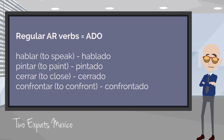Let's take a look at how you convert your verbs into the past participle. First we're going to cover regular AR verbs — regular means they follow this pattern, and AR refers to the ending. There are three types of verbs in Spanish: ones that end with AR, ones that end with ER, and ones that end with IR. For AR verbs, all we do is drop the AR and add ADO — that's the masculine singular form. For example: hablar becomes hablado, pintar becomes pintado, cerrar becomes cerrado, confrontar becomes confrontado.